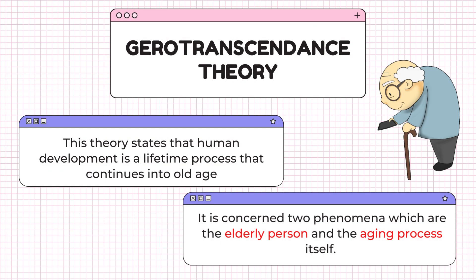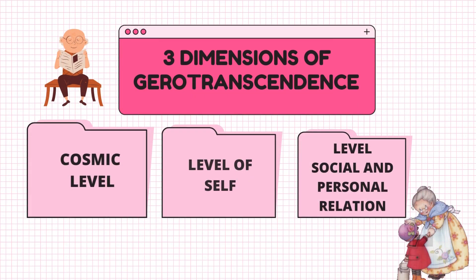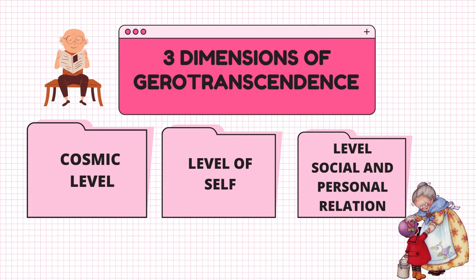Gerotranscendence theory states that human development is a lifelong process that continues into old age, making it a natural developmental process. When optimized, it leads to a new perspective, and this process involves a development in which people gradually change their basic conception, resulting in a shift in their definition of reality. It is constant to two phenomena: the elderly person and the aging process itself. The signs of gerotranscendence can be described as ontological changes on three dimensions: the Cosmic Level, the Level of Self, and the Level of Social and Personal Relations.